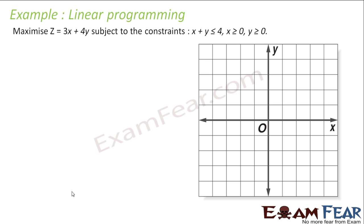So we have z is equal to 3x plus 4y, and the constraints are x plus y is less than 4, x is greater than 0, and y is greater than 0.